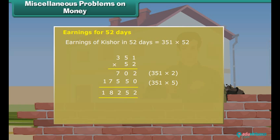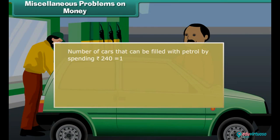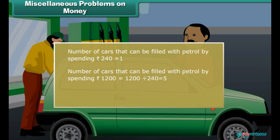It takes 240 rupees to fill a car with petrol. How many cars can be filled with petrol by spending 1,200 rupees? Number of cars that can be filled spending 240 rupees is 1. Number of cars filled by spending 1,200 rupees is 1,200 divided by 240, that is 5.